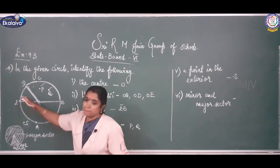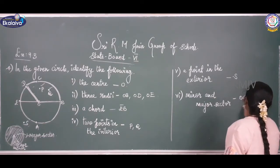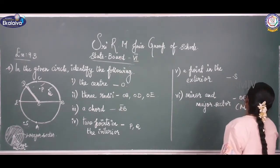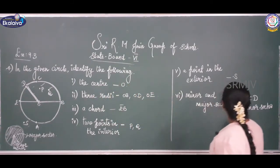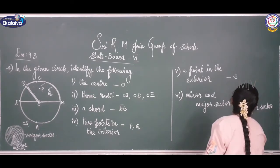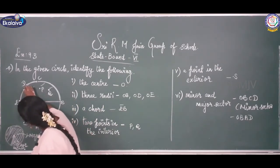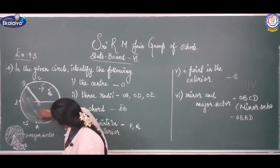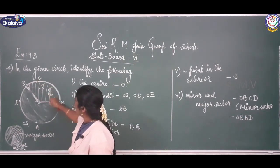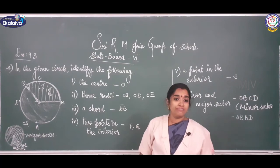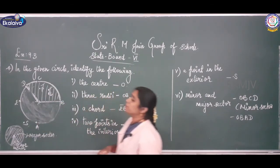The part with more area is the major sector. So O, B, A, D is the major sector. The full larger part is the major sector and the smaller part is the minor sector. Can you differentiate between these two?